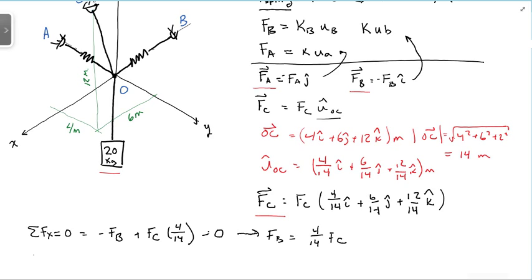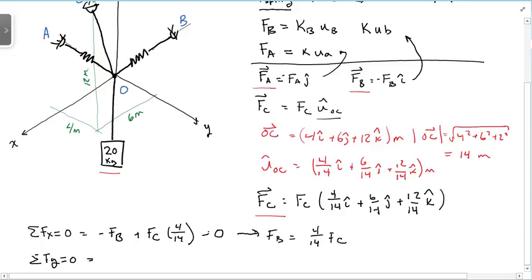Next, I can take the sum of the forces in the y direction equals 0 equals minus FA plus FC times 6 over 14. And that equals 0. So that tells me that FA is equal to 6 over 14 FC.